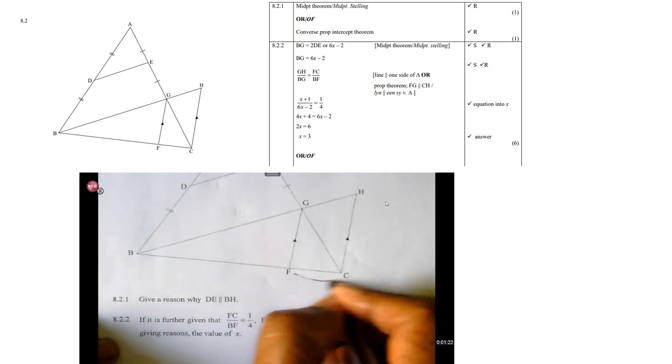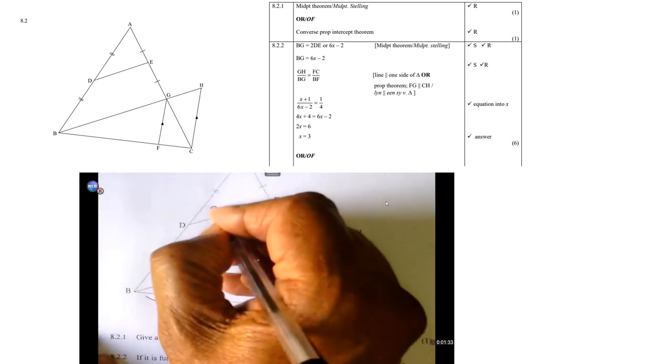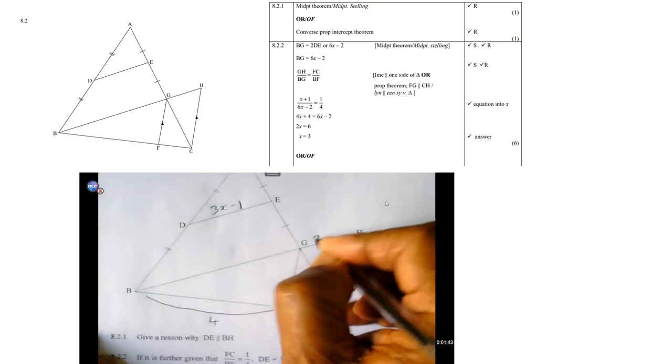So, just remember that. The second question, it is further given that FC over BF, now look here, FC over BF is a quarter. FC over BF is a quarter and DE is 3X minus 1. So, DE is 3X minus 1 and GH is X plus 1. So, that is given to us. Now, you must calculate with reasons the value of X.